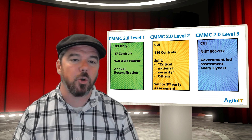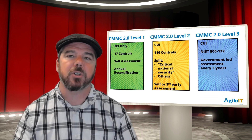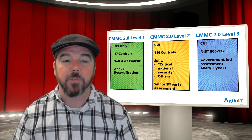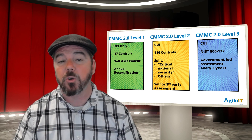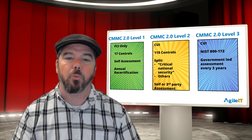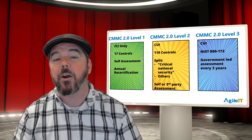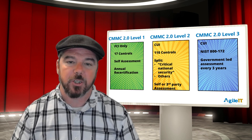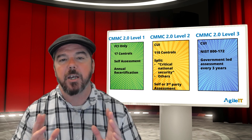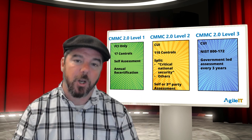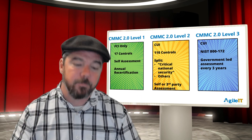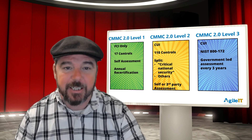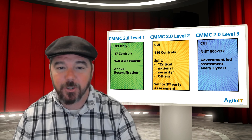CMMC level three is still being worked on. It encapsulates levels four and five from CMMC 1.0, includes some controls from NIST 800-172, and will require a government-led assessment every three years. This will not be a third-party assessment — it will be done by the DOD, probably DCBAC, and again, no C3PAO.